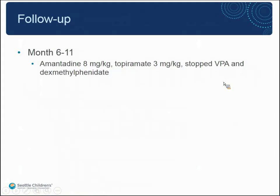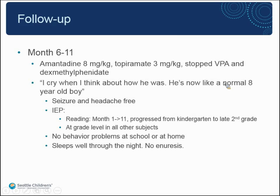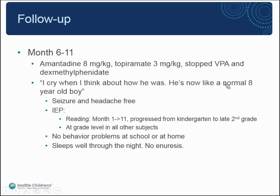I just called his mom a couple of days ago. He's still on amantadine; he switched valproic acid over to topiramate for headache control and stopped the dexmethylphenidate he'd been taking for quote-unquote ADHD. Mom says: 'I cry when I think about how he was. He's now like a totally normal eight-year-old boy' — seizure-free, headache-free. His IEP shows progression from kindergarten to late second-grade levels, almost caught up to his colleagues. No behavior problems at school, he sleeps well through the night and has no enuresis. The question remains: was it amantadine? Steroids with a delayed effect? Valproic acid with a delayed effect? Or was it just time?